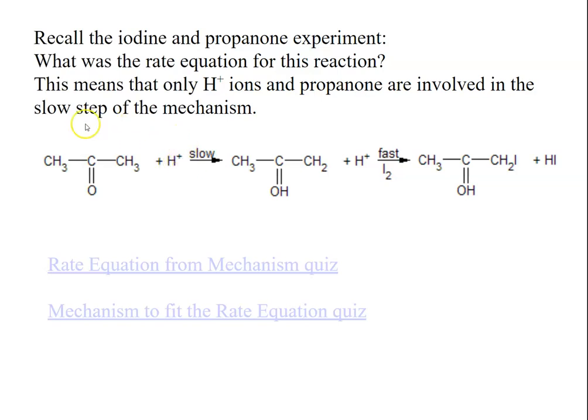Only species in the slow step, or sometimes if there's several steps before the slow step, those involved in the steps before, will appear in the rate equation.